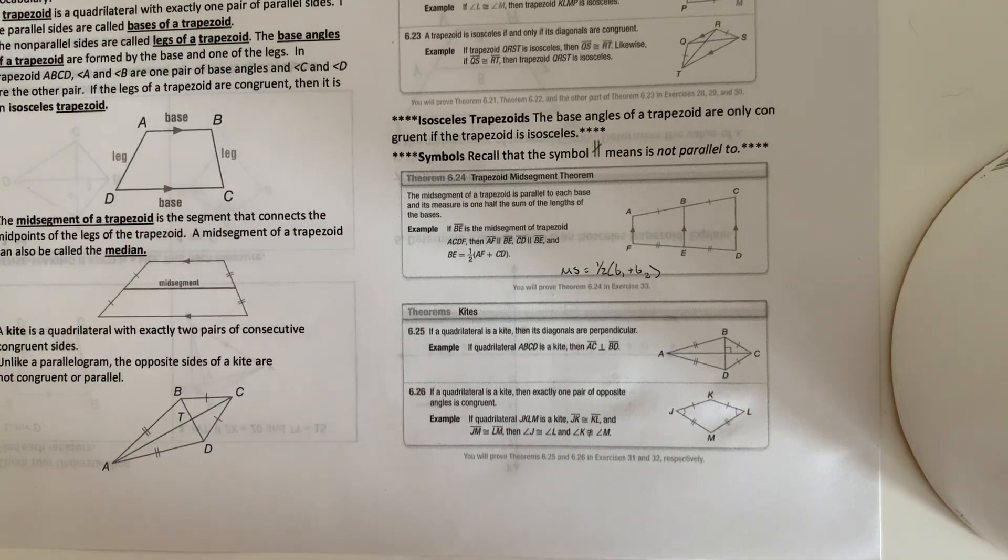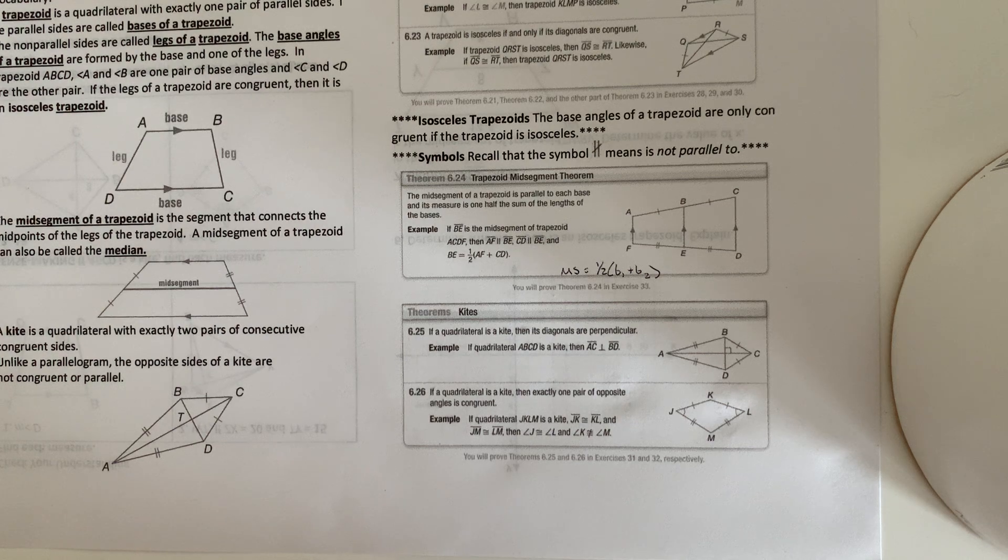Kite. If a quadrilateral is a kite, then its diagonals are perpendicular. And then if a quadrilateral is a kite, then exactly one pair of opposite angles is congruent.